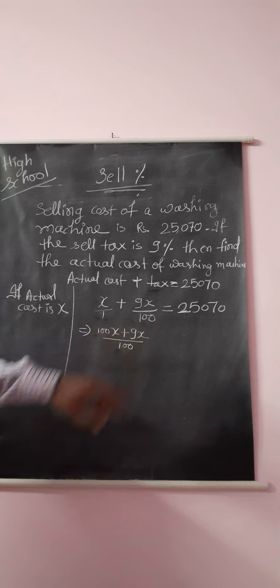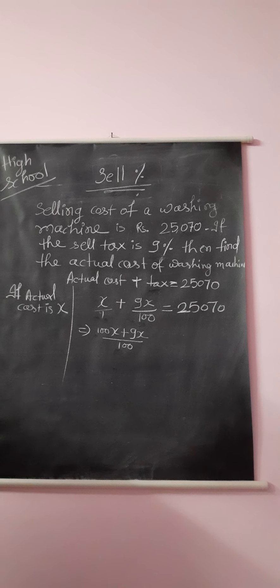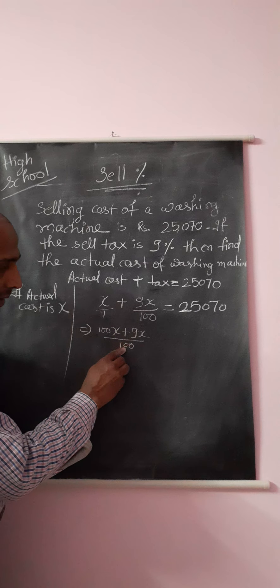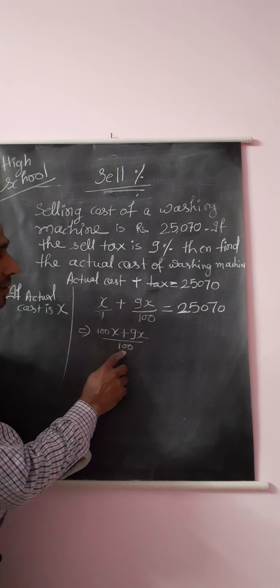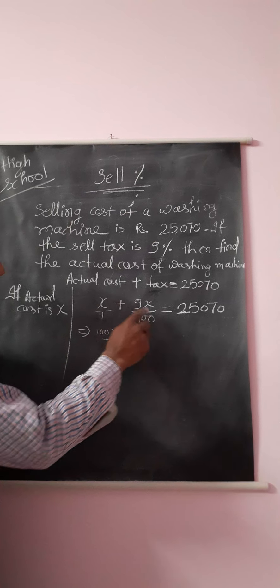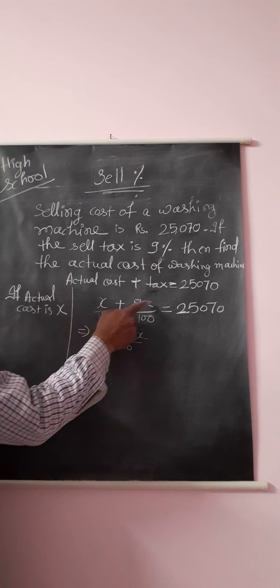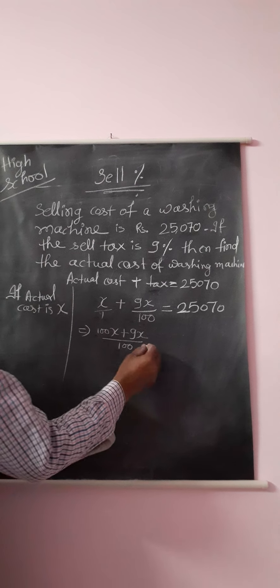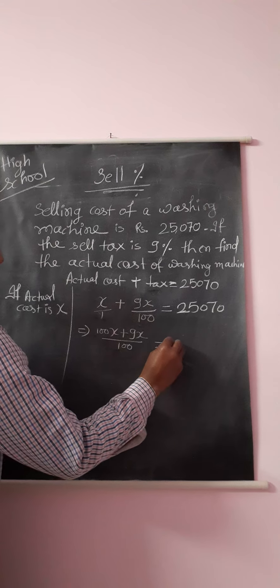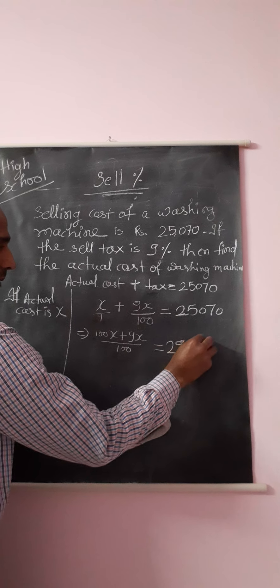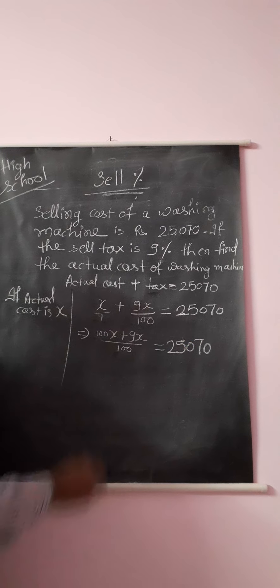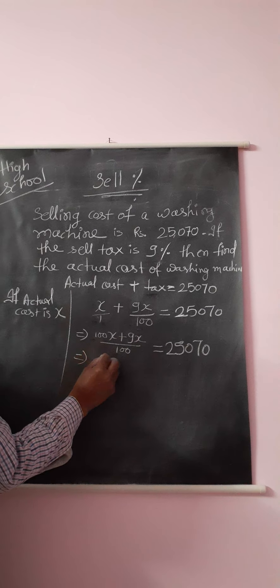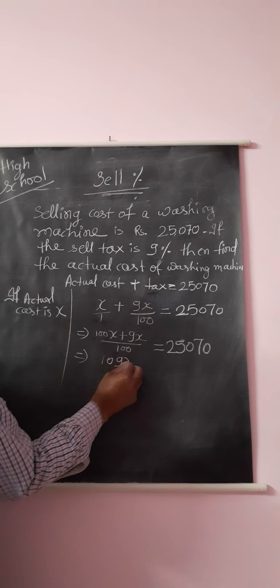The second step is 9x upon 100. We repeat the same procedure. When we divide 100 by 100 we get 1, and 1 multiplied by 9x is again 9x. We can add these numbers: it will be 109x upon 100 equal to 25,070.